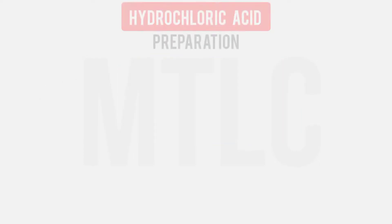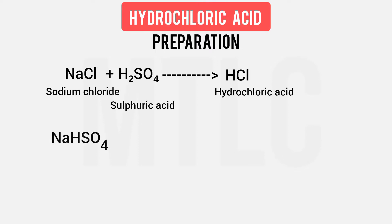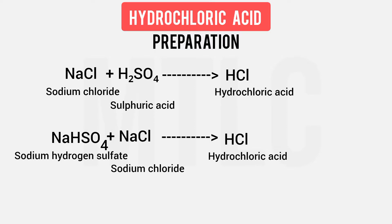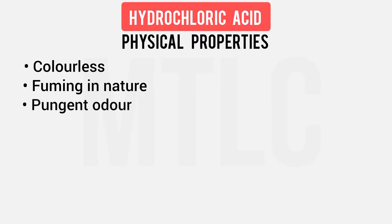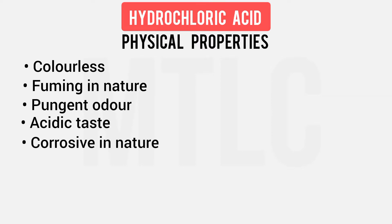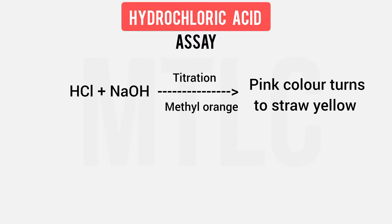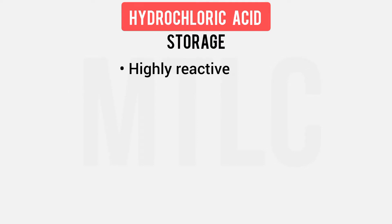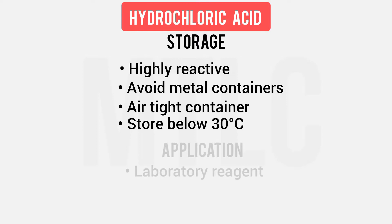Hydrochloric acid is prepared by adding sulfuric acid to sodium chloride, yielding sodium hydrogen sulfate and hydrochloric acid gas. Its physical properties: it is colorless, fuming, has a pungent odor, acidic taste, and is corrosive in nature. For assay, sodium hydroxide is used with methyl orange indicator. Since it is very reactive, it must be stored in an airtight metallic container at a temperature below 30 degrees Celsius.